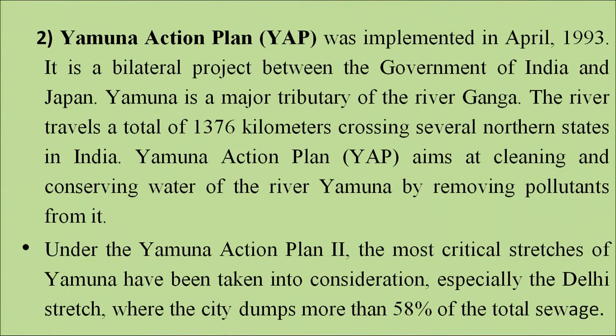The Yamuna Action Plan was also implemented in 1993. It is a bilateral project between the Government of India and Japan for cleaning River Yamuna, which runs for about 1,336 kilometers across several northern Indian states. The Action Plan aims at cleaning and conserving the water of River Yamuna by removing pollutants. Under the Yamuna Action Plan, the most critical stretches of Yamuna have been taken up for cleaning, with primary focus on the Delhi stretches where the city dumps most of its total sewage.